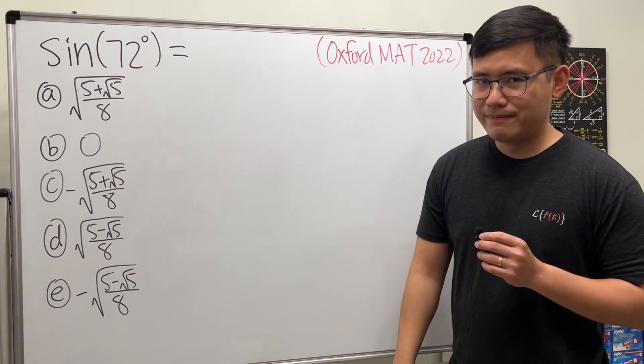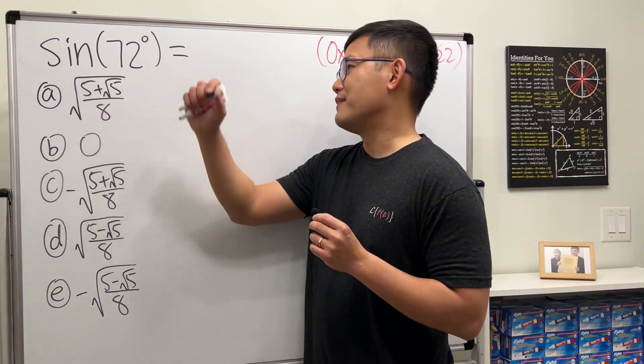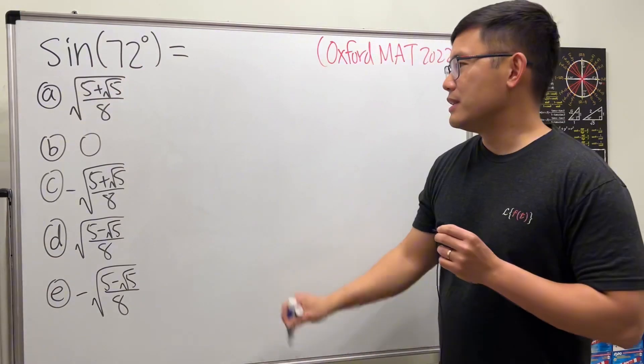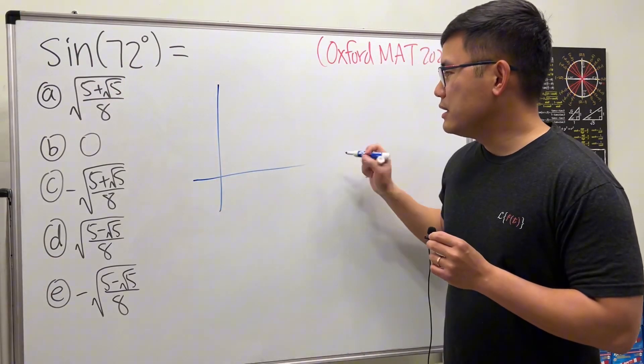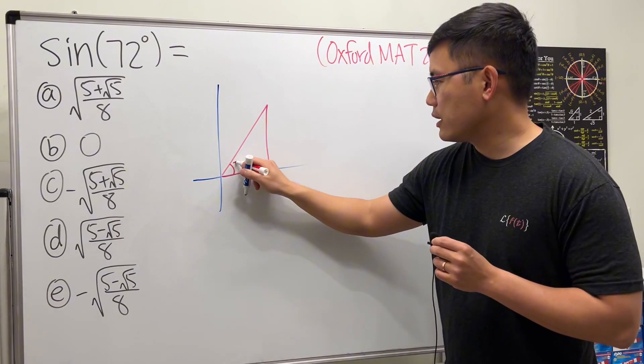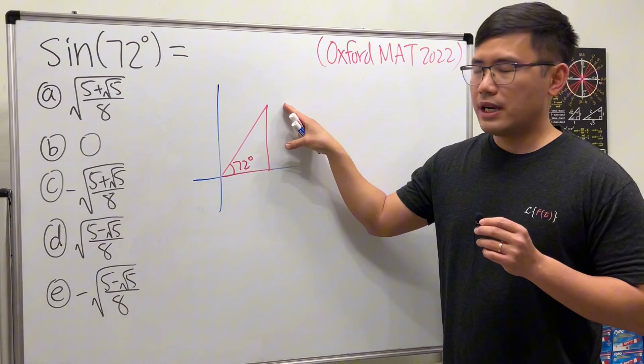It's not going to take us too long, and of course we still have to know some facts about sine functions. So firstly, we have sin(72°) and we know 72 degrees is in the first quadrant.